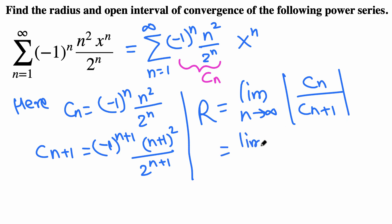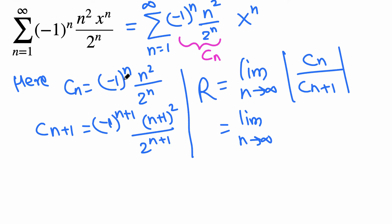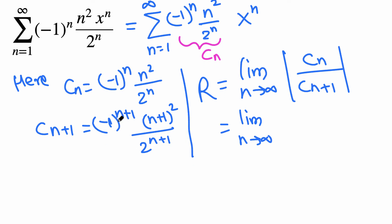Let's evaluate this limit. The absolute value takes care of negative 1 to the n and negative 1 to the n plus 1, so they are gone. Everything else is all positive. So cn, n squared over 2 to the n, divided by this, that means multiplied by its reciprocal.